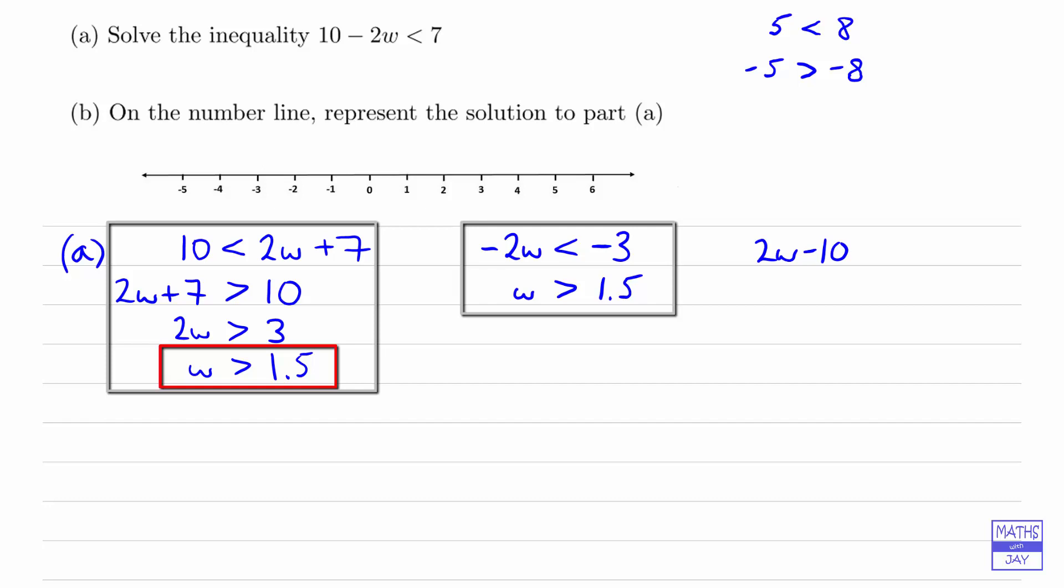And then I'm changing the direction. So instead of less than, I'm writing greater than. And instead of 7, I'm writing negative 7. So we have multiplied through by negative 1. And then we would add 10 to both sides. So 2w is greater than negative 7 plus 10, so that would be 3. And then w is greater than 1.5.